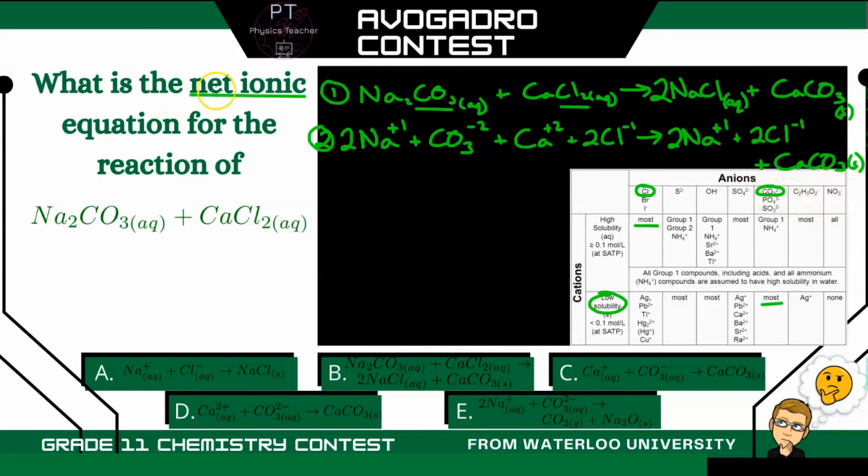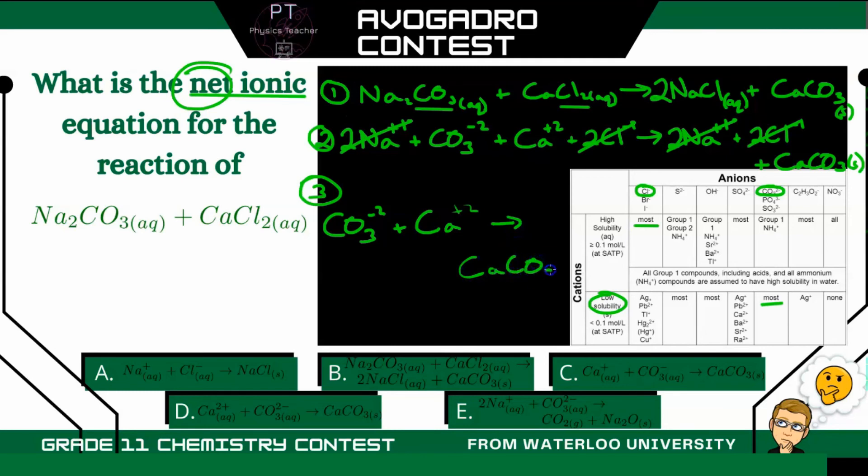So now what I can do to write the net ionic equation, our final step, will be to write that net ionic equation by cancelling out any identical terms on the left and right side. So here we have two sodiums, and here we have two sodiums. We have two chlorines, and two chlorines, and that's it. So our net ionic equation becomes CO3 negative 2 plus Ca positive 2, which gives us CaCO3 as a solid. And these are both aqueous. So our answer, then, is D.